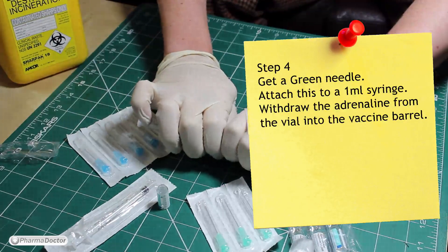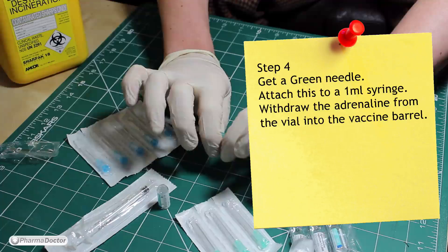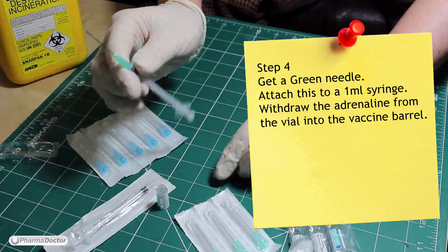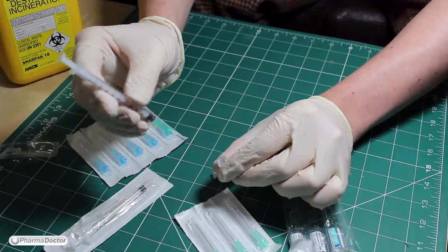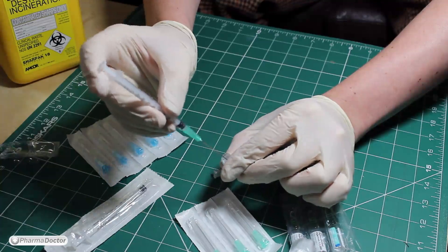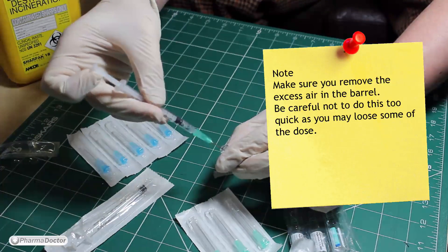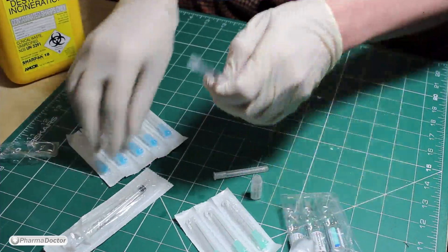Step 4 is to get a green needle, attach this to a 1 ml syringe, and withdraw the adrenaline from the vial into the vaccine barrel. When taking a sheath off a needle, make sure that your hands are steady so that when you pull it apart your hands don't come back on each other.